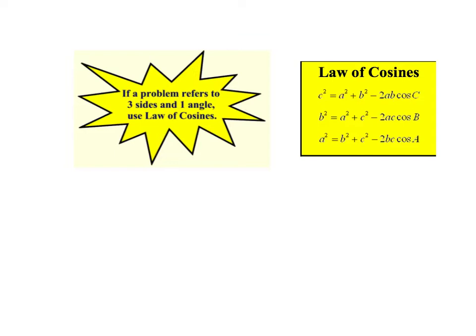Off to the side on the right, here's an example of what the law of cosines looks like. I've written three of them down, and if you recall, there were three pieces to the law of sines, and you're just using one of these formulas. They're all the same formula, except you'll notice this one starts with c and ends with c, this one starts with b and ends with b, starts with a and ends with a.